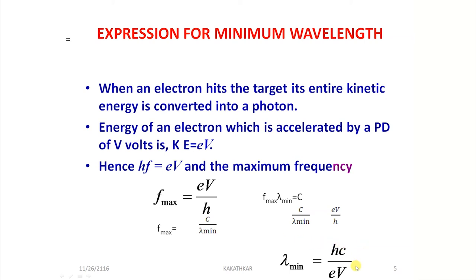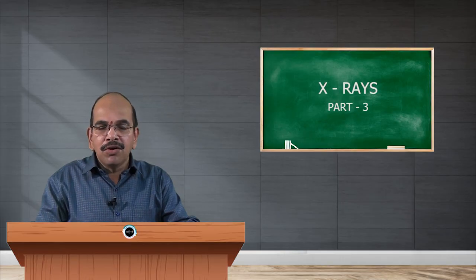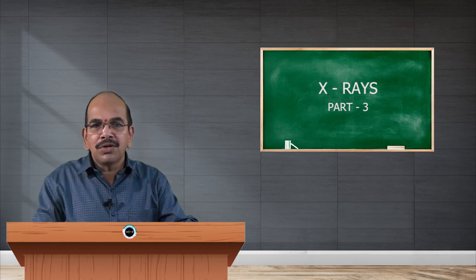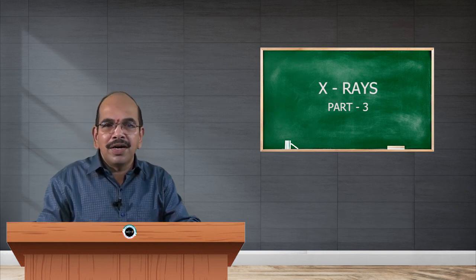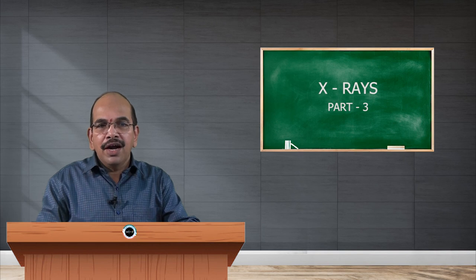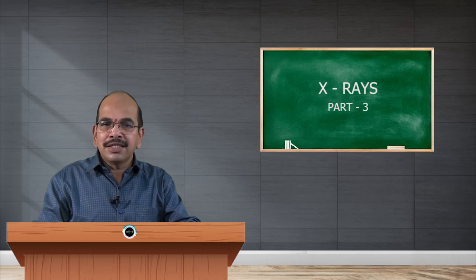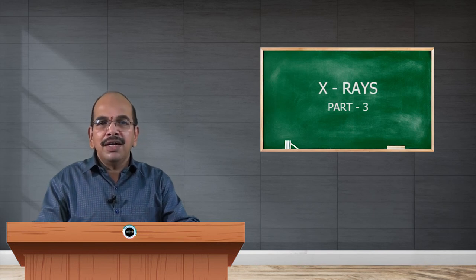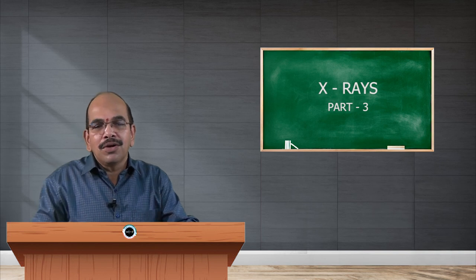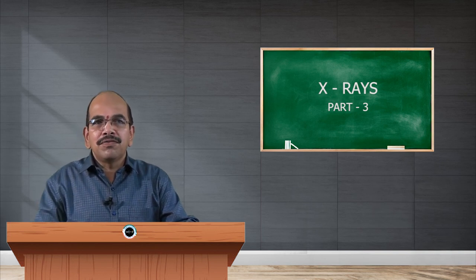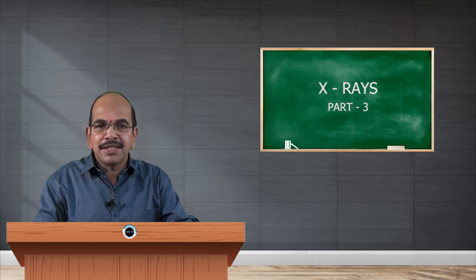Based on this expression you can also calculate the maximum frequency of radiation. If one quantity is unknown and all others are known, you can determine the unknown using this equation — whether it is the frequency of x-radiation, the accelerating potential, or the minimum wavelength. This is the expression for minimum wavelength of x-radiation.